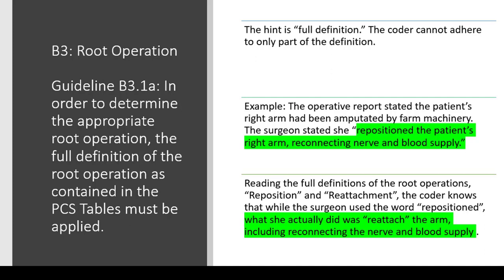Here's an example. The operative report stated the patient's right arm had been amputated by farm machinery. The surgeon stated she 'repositioned the patient's right arm, reconnecting nerve and blood supply.' Remember that the physician does not have to say exactly what the PCS codebook says. The coder determines the root operation by looking at what the physician is describing and applying the full definition. So while the surgeon used the word 'repositioned,' what she actually did was reattach the arm, because she talks about reconnecting the nerve and blood supply.